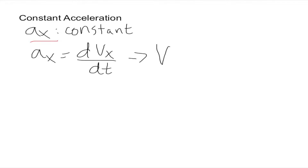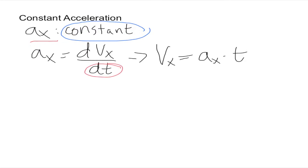So vx is equal to — right now all we have is that acceleration is a constant, so it's going to be a number like 10. After finding the integral of that constant, we come up with: ax stays the same, it's a constant, so ax times a variable — in this case we're talking about time, so that's t — plus another constant. This new constant is not the same as the acceleration constant.